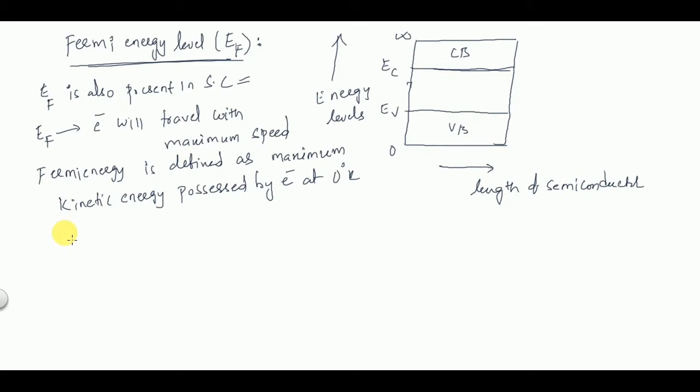This Fermi energy level is not constant — it differs for intrinsic and extrinsic semiconductors, and for n-type and p-type semiconductors. For different types of semiconductors we have different Fermi energy levels. We'll discuss those one by one in upcoming videos. In this video we'll concentrate only on Fermi energy level and its properties.